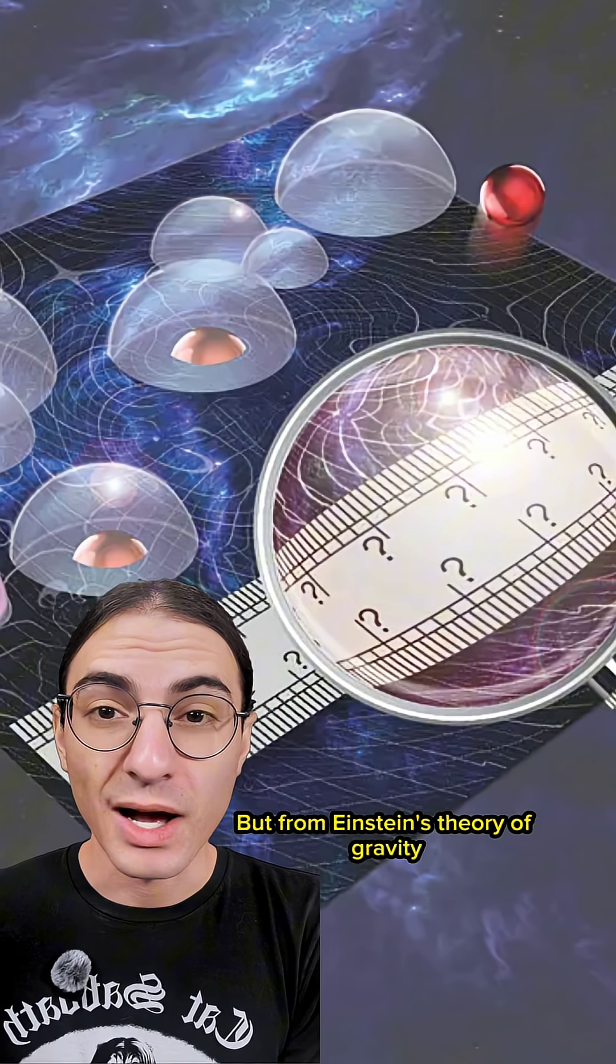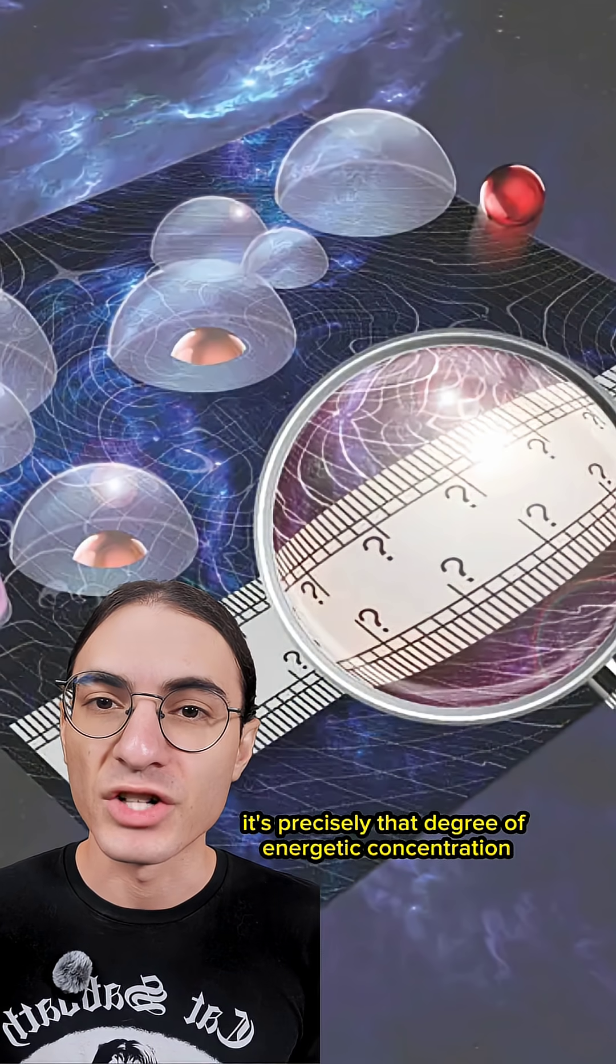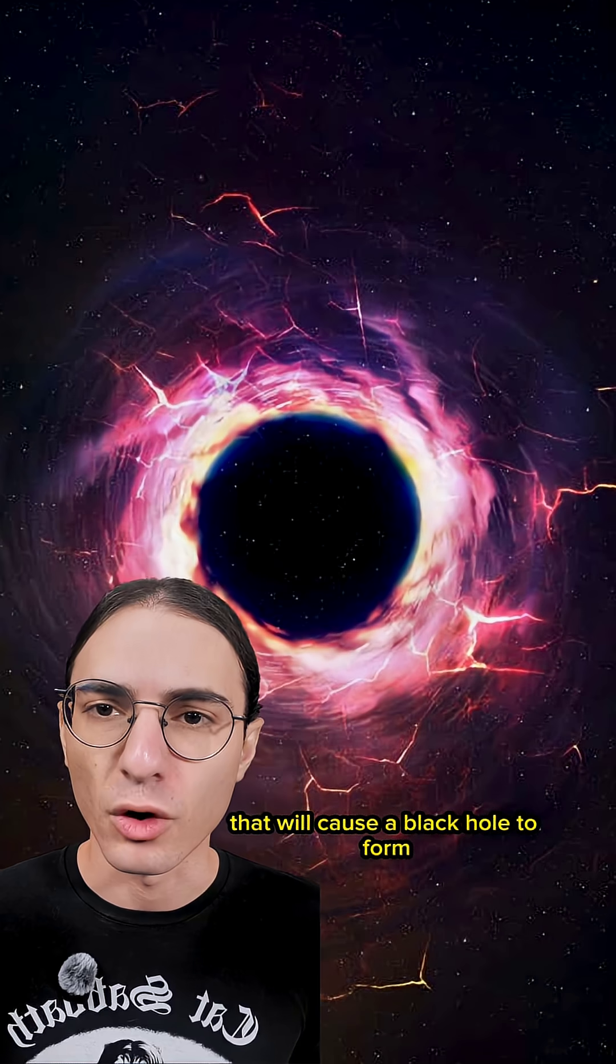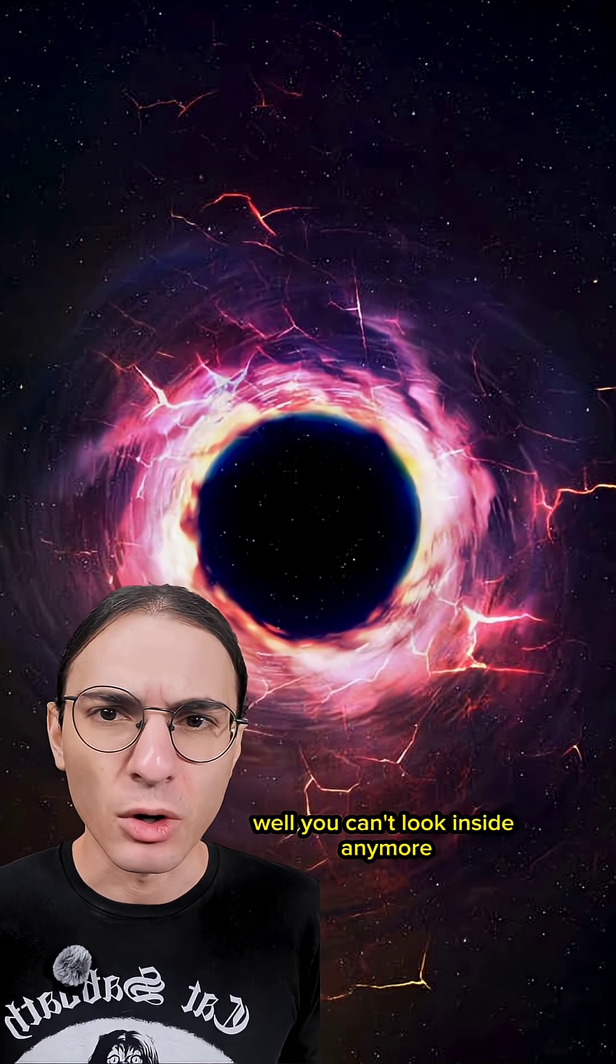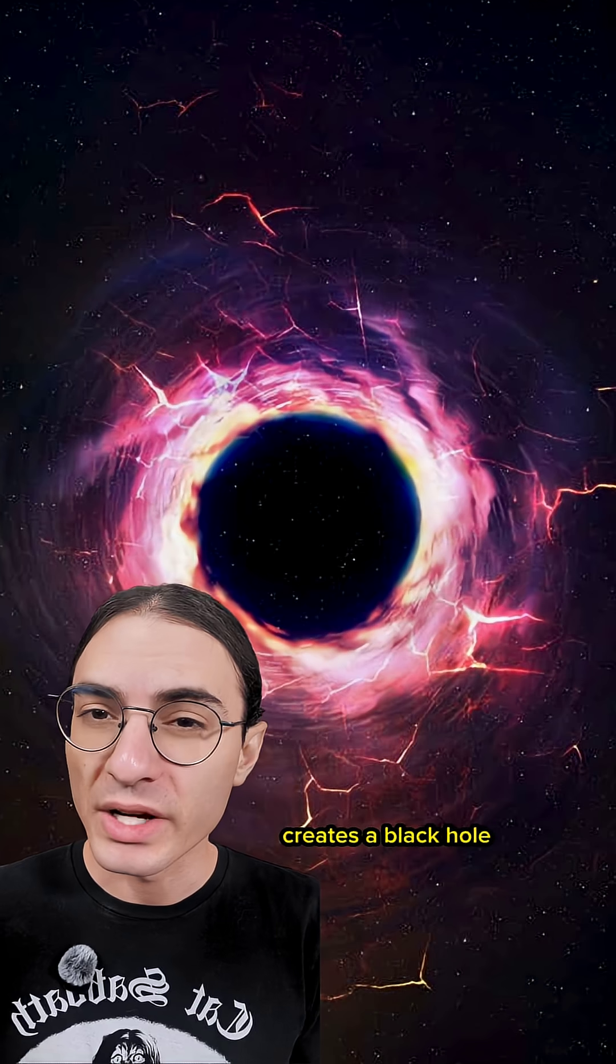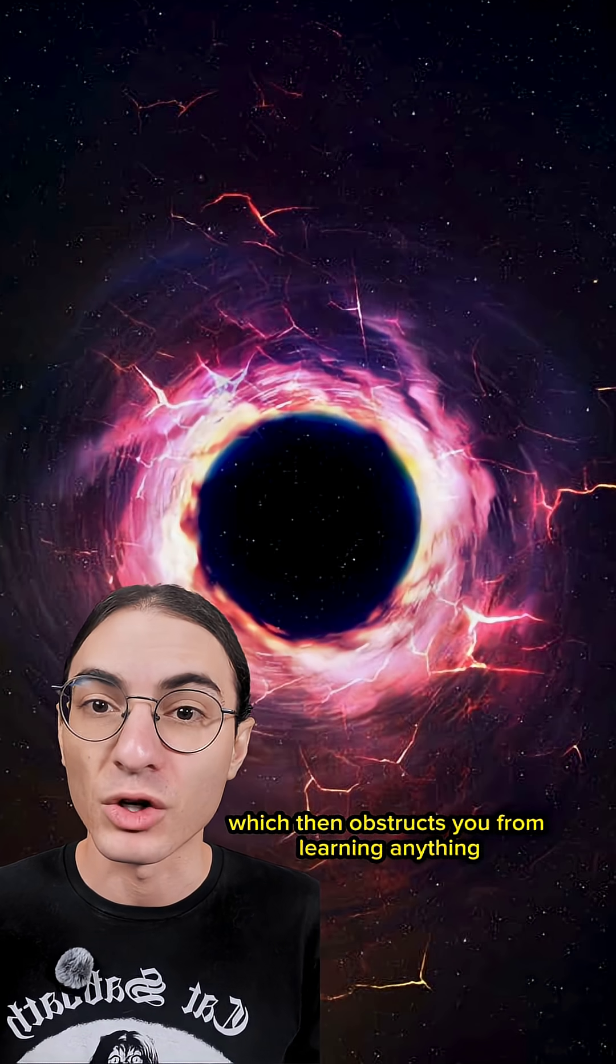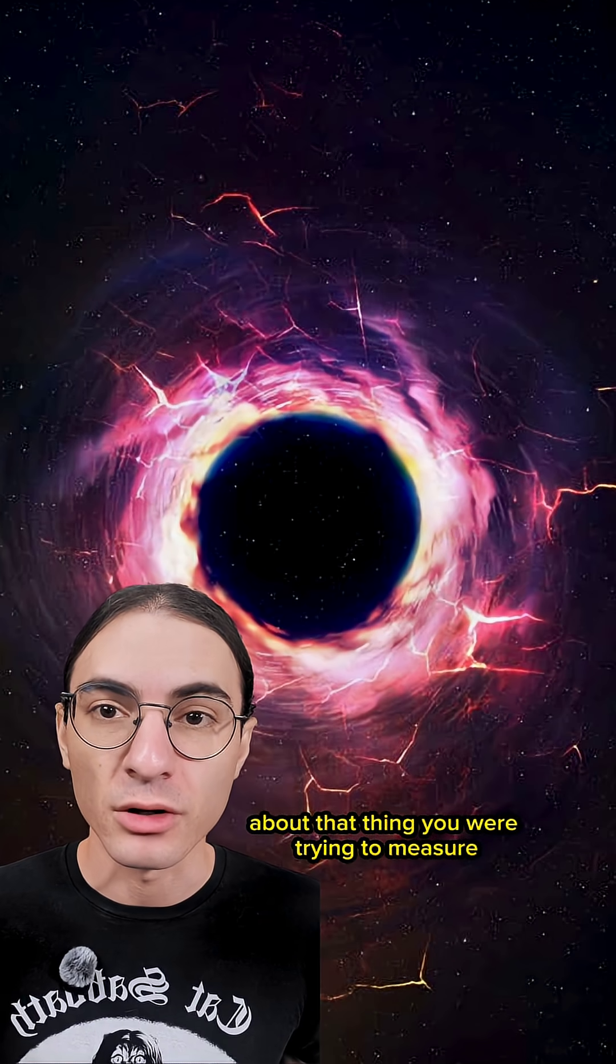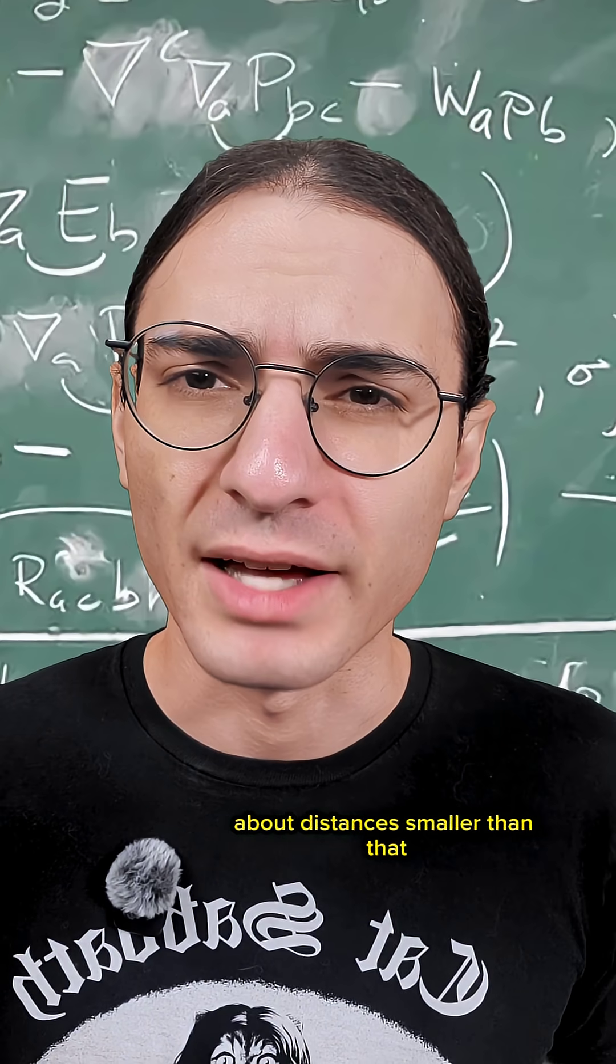But from Einstein's theory of gravity, it's precisely that degree of energetic concentration that will cause a black hole to form. And once you've done that, you can't look inside anymore. The mere act of trying to measure something with a length smaller than the Planck length creates a black hole which then obstructs you from learning anything about that thing you were trying to measure. And so we just can't learn anything about distances smaller than that.